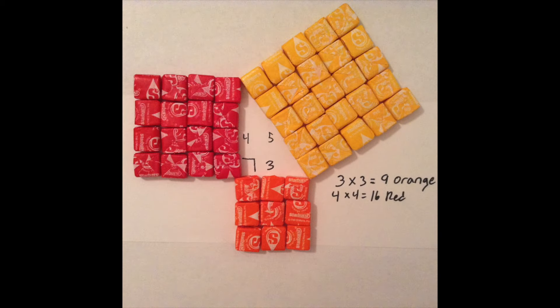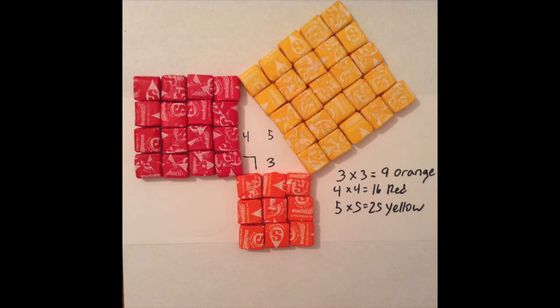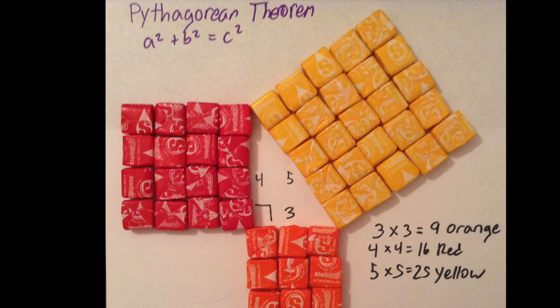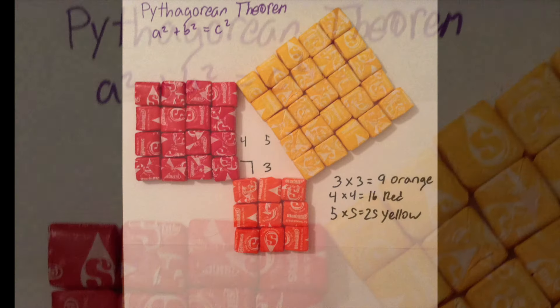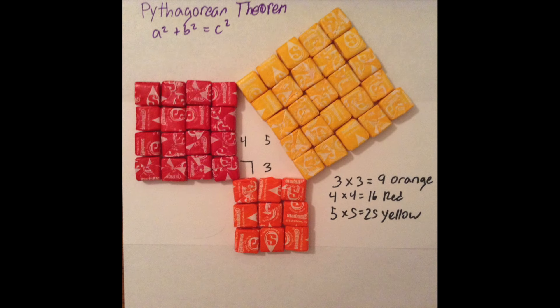So the 3x3, 4x4, and 5x5. Remember the Pythagorean Theorem? Well, this applies directly to it. Have you ever wondered where that square comes from in the Pythagorean Theorem?